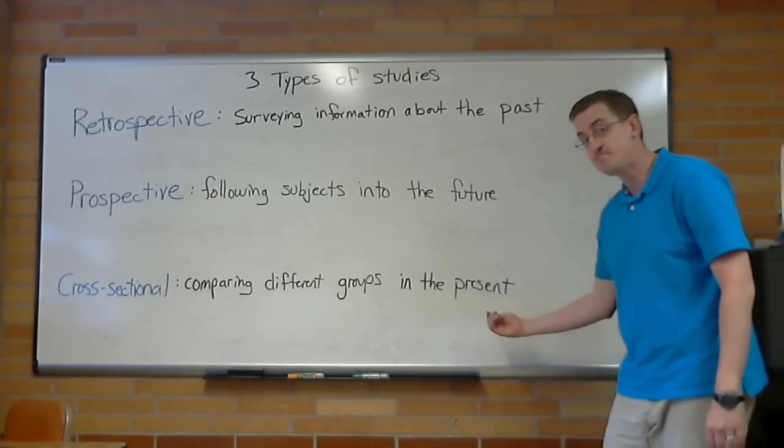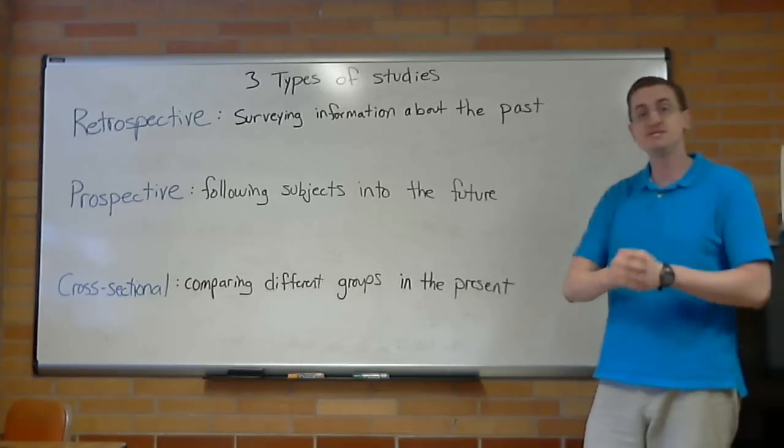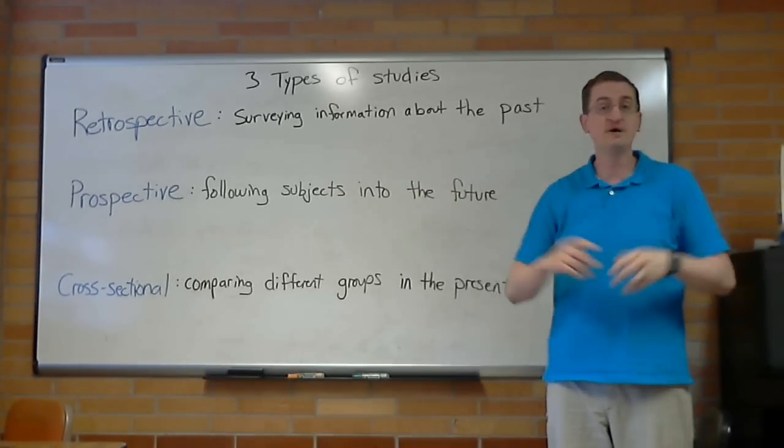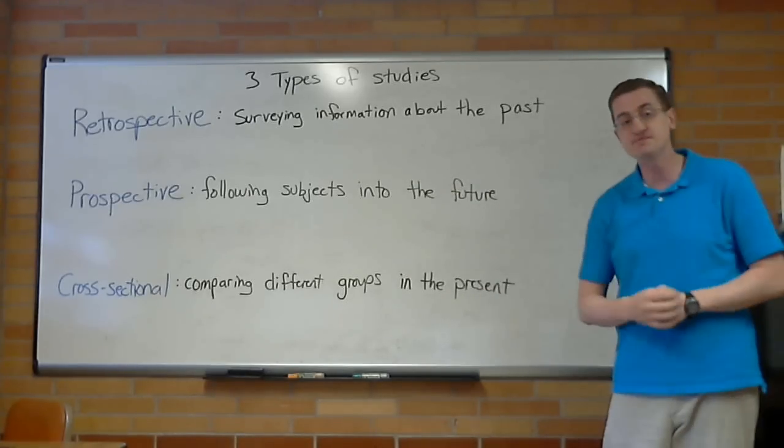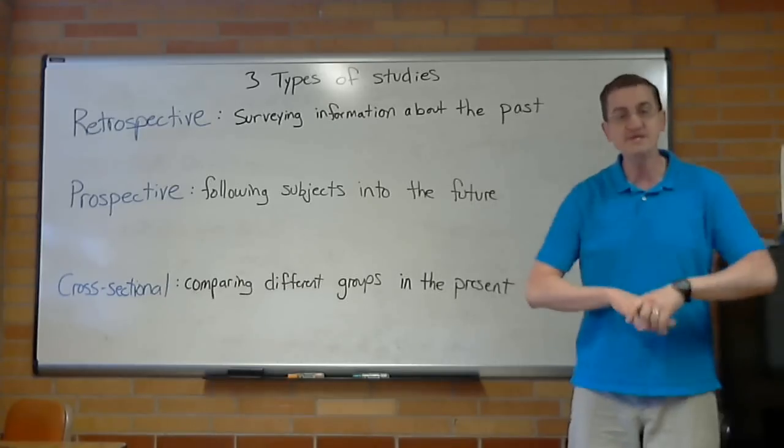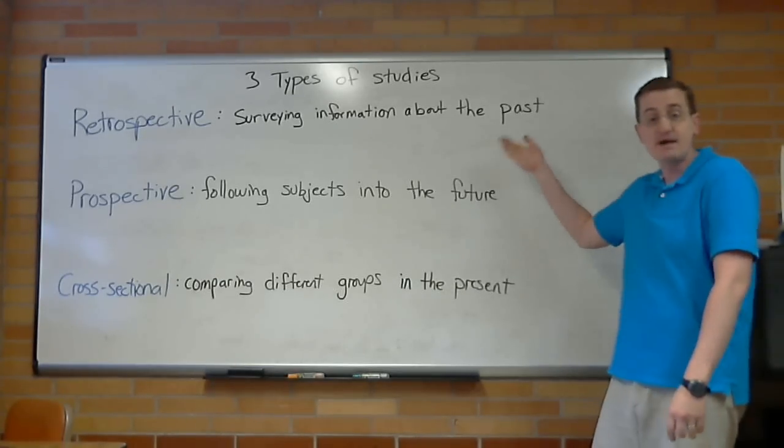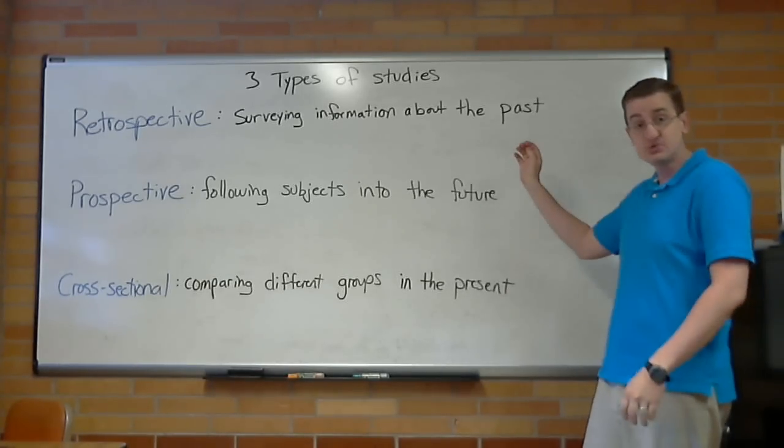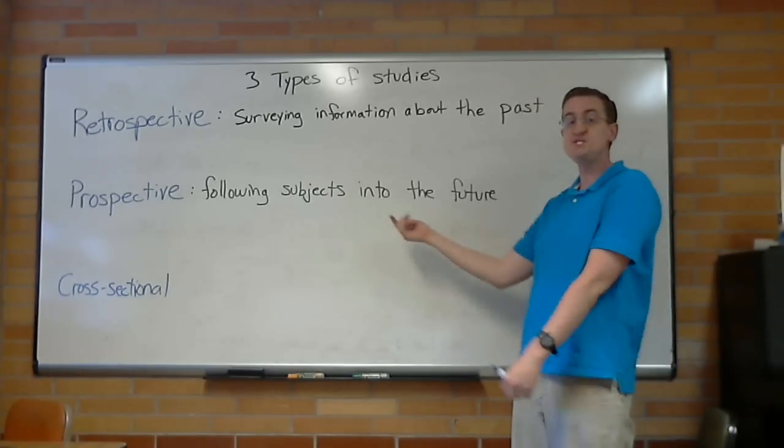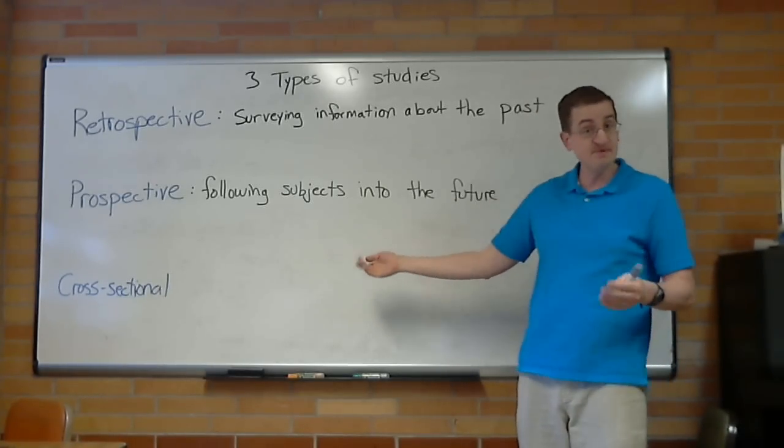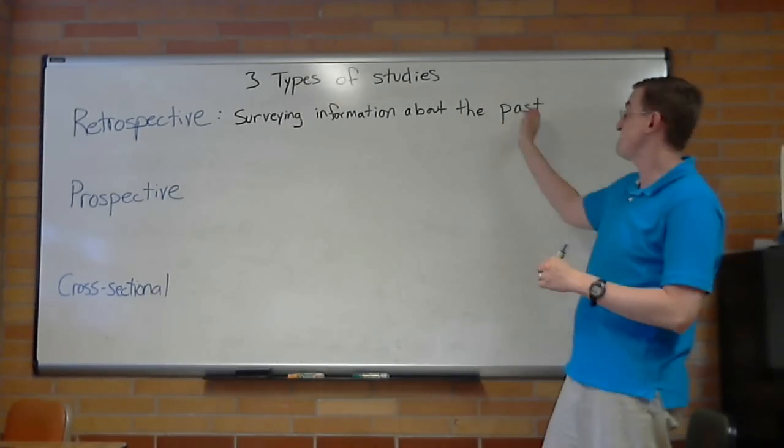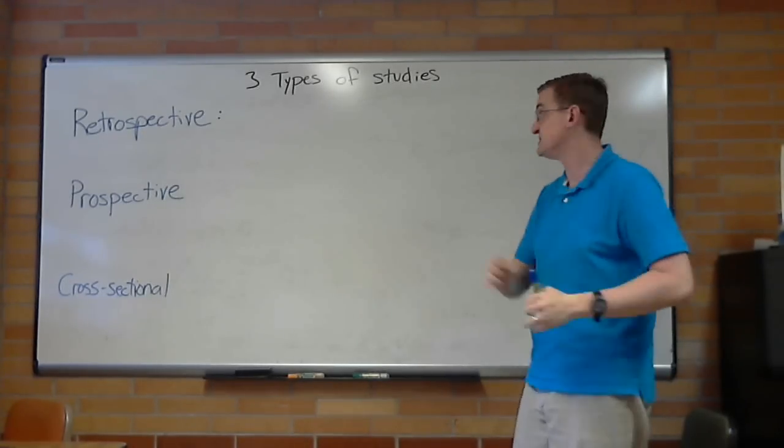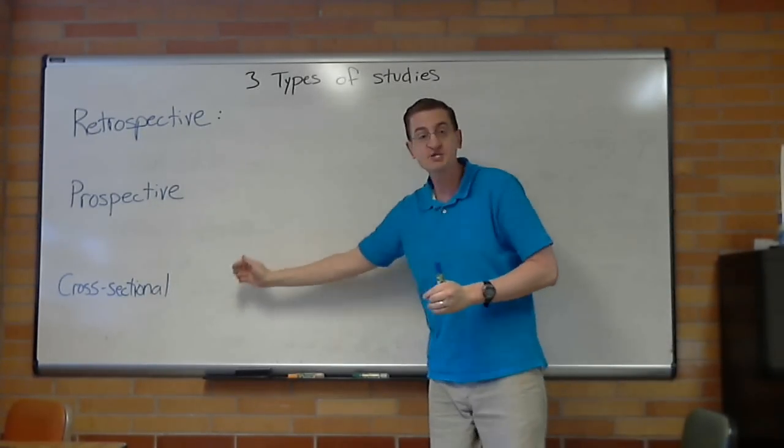Comparing different groups in the present. And that is most of what we do in this class. We're comparing men versus women now. Or we might be comparing two different proportions of Republicans versus Democrats. Those are examples of cross-sectional type studies. Now, the reason why this matters is because the types of errors are different. And how they are handled is different. And sometimes very tricky. For retrospective studies, following subjects into the future. Cross-sectional, of course, being for surveying information about the past. While prospective is, so we've got three different types of studies. Retrospective, prospective, and cross-sectional.